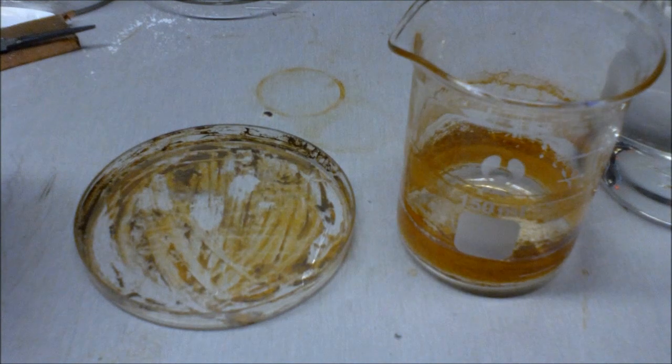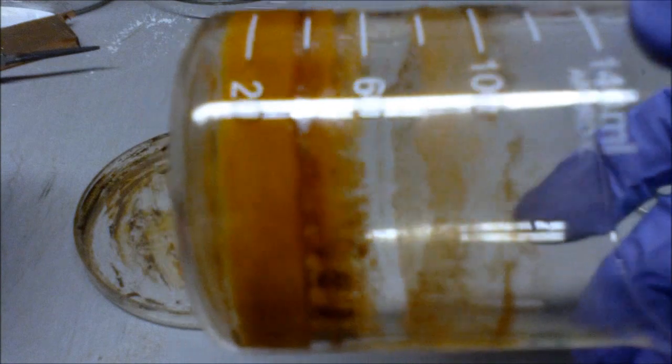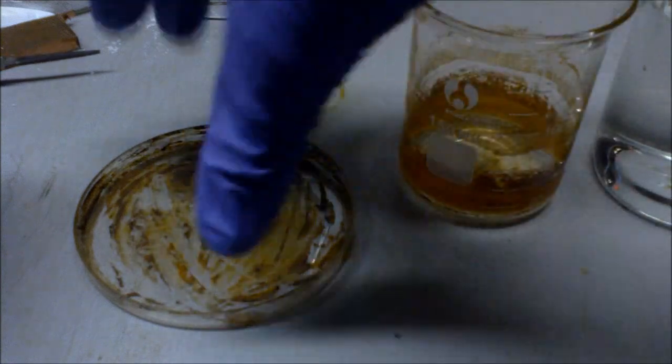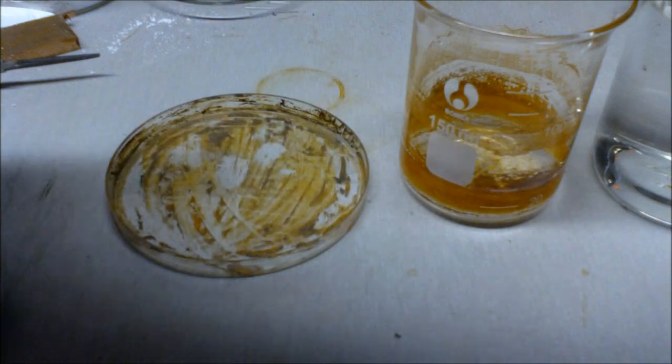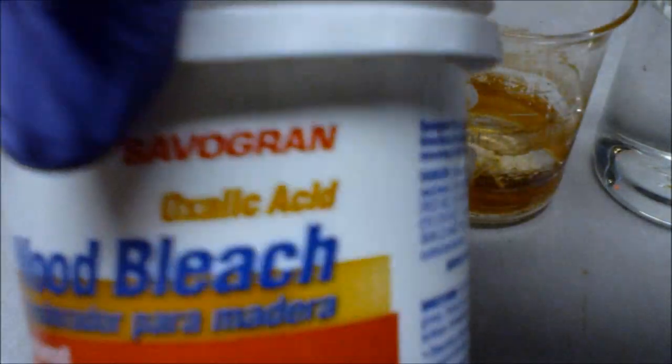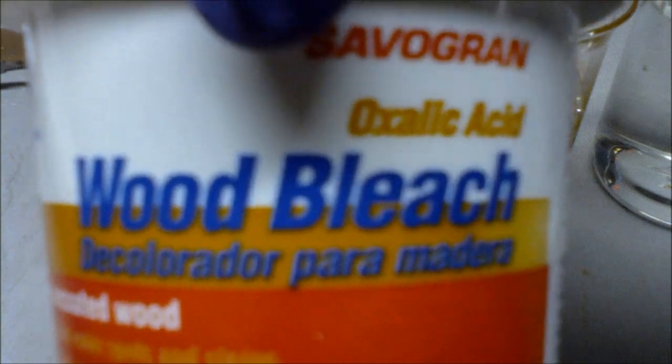In order to do this, you will need some glass that is affected by rust. This is actually plastic. And you will need oxalic acid. This can be bought in the form of wood bleach at your local hardware store.